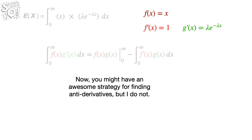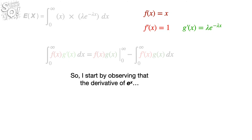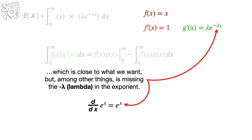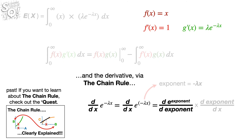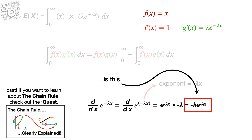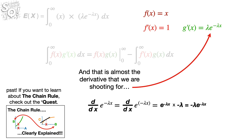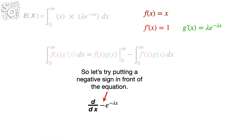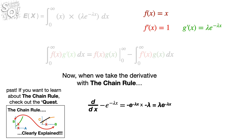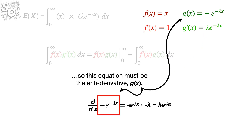To find the antiderivative, we observe that the derivative of e to the x is e to the x, which is close to what we want, but missing the negative lambda in the exponent. Putting negative lambda in the exponent and taking the derivative via the chain rule gives negative lambda times e raised to the negative lambda x — almost g'(x) except for the missing negative sign. Putting a negative sign in front and taking the derivative with the chain rule gives exactly g'(x). So the antiderivative g(x) is negative e raised to the negative lambda x, divided by lambda.